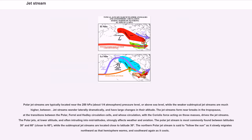Polar jet streams are typically located near the 250 hectopascals, about one-quarter atmosphere, pressure level, or above sea level, while the weaker subtropical jet streams are much higher. Jet streams wander laterally dramatically, and have large changes in their altitude. The jet streams form near breaks in the tropopause, at the transitions between the polar, Ferrel and Hadley circulation cells, and whose circulation, with the Coriolis force acting on those masses, drives the jet streams.